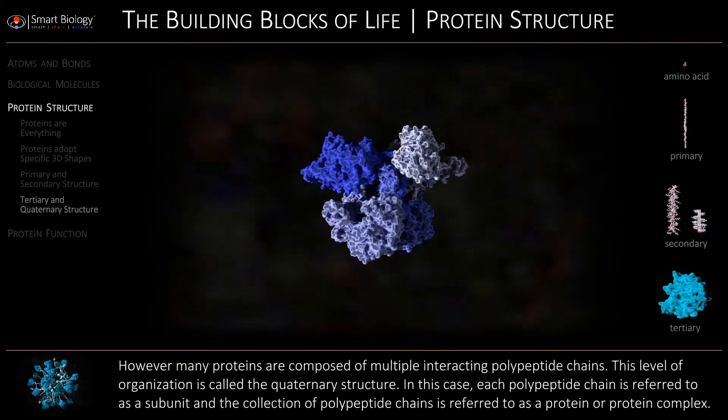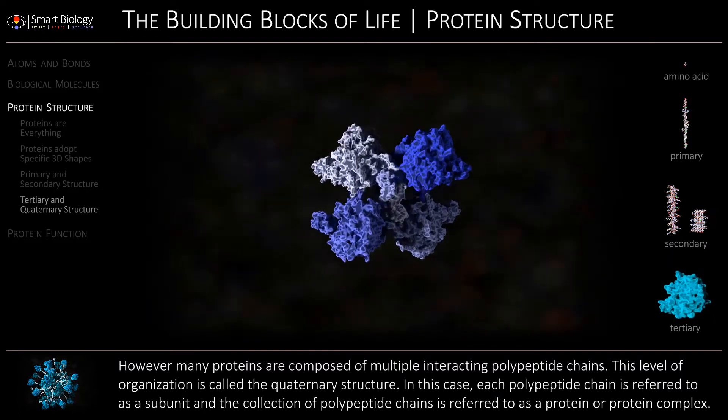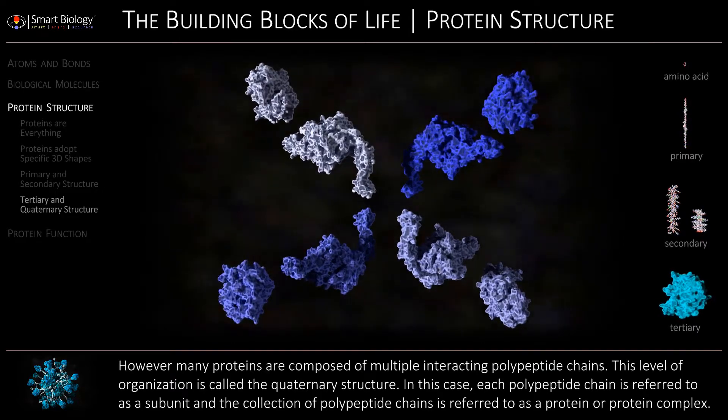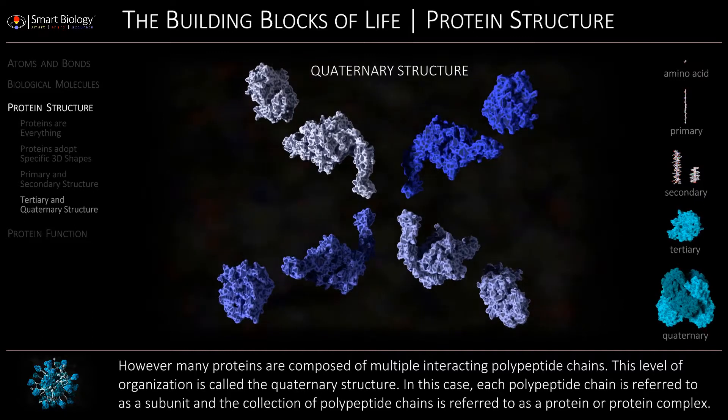Many proteins are composed of multiple interacting polypeptide chains. This level of organization is called the quaternary structure.